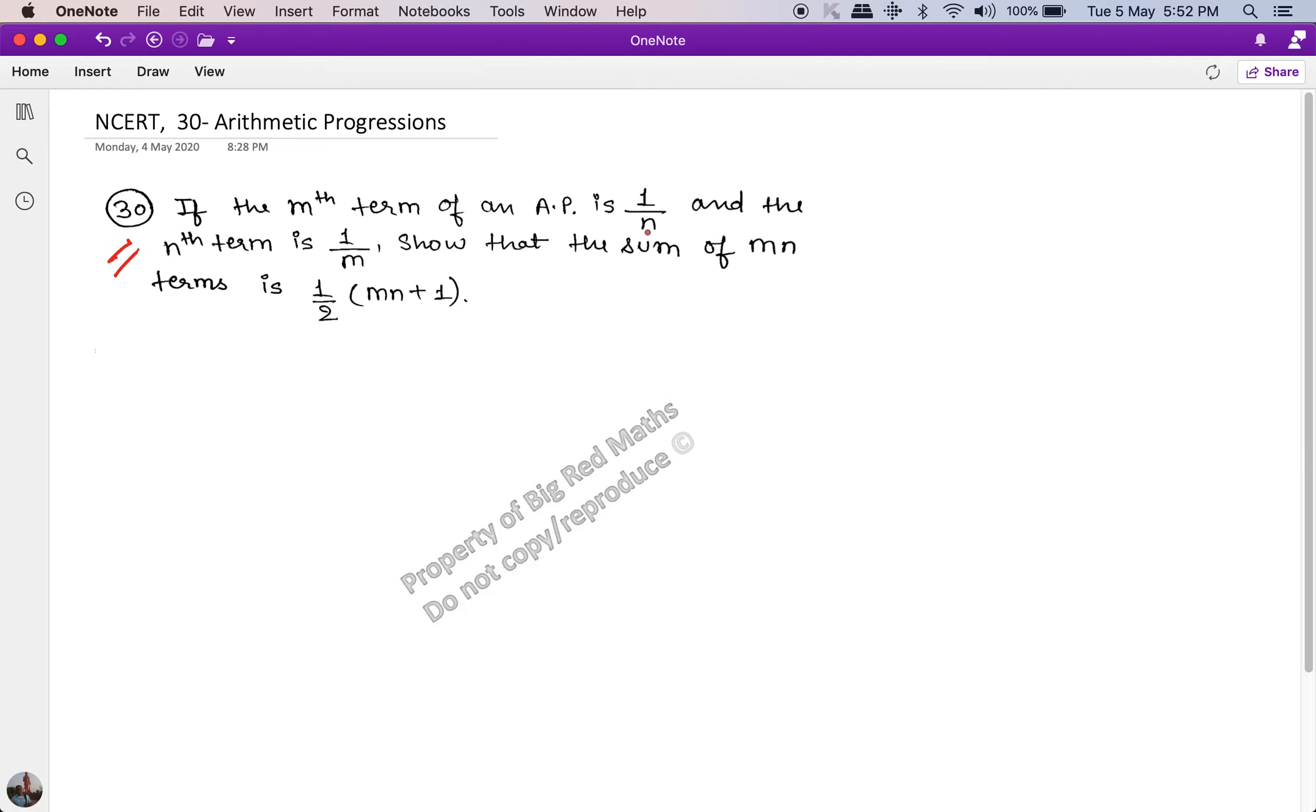Now this question says if the mth term of an AP is 1 upon n, so a of m is equal to 1 upon n, and the nth term is 1 upon m.